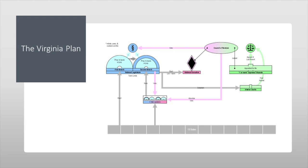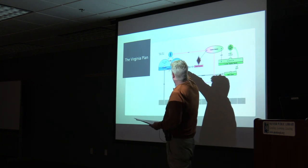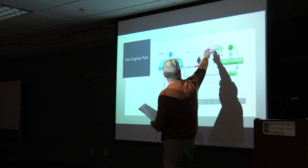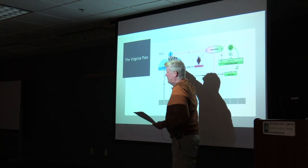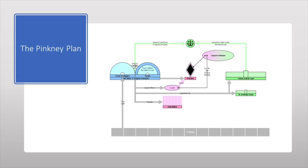Then there's the Connecticut Compromise. The Virginia Plan calls for a two-house national legislature, all proportional to population — which makes sense if you're New York, Virginia, or Pennsylvania, but less so if you're South Carolina, Maryland, or Delaware. The upper house in the Virginia Plan is elected by the lower house. Pinckney is the first one to start raising the issue of proportional to what — because Virginia has a lot of people, but about a fifth of them are not white, and according to the state's legal system, not fully counted as persons.